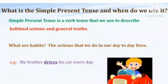Now we can see examples to understand simple present tense and when we use it. Simple present tense is a verb tense that we use to describe habitual actions and general truths. Habits are the actions that we do in our day-to-day lives.